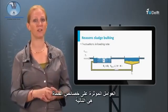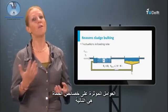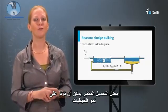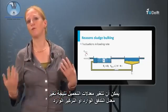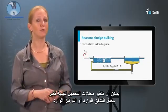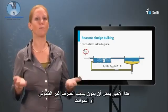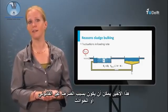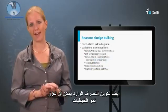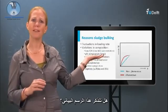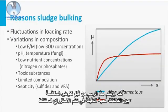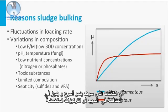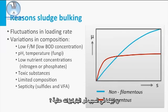Parameters influencing sludge characteristics include the following. A fluctuating loading rate can influence the growth of filaments, due to fluctuating influent flow rate or influent concentration. The latter can be caused by illegal discharges or accidents. Also, the composition of the influent can enhance filamentous growth. As shown previously on the competition of microorganisms in mixed culture systems, which organism will grow fastest and win the competition at low substrate concentrations?